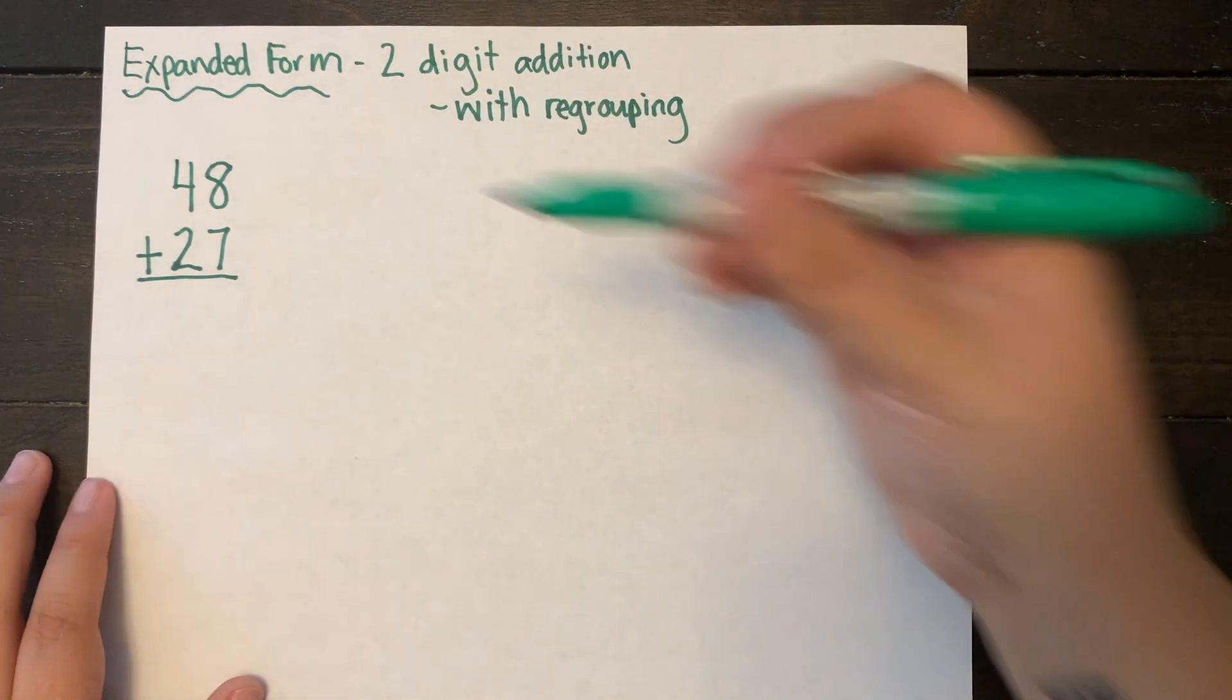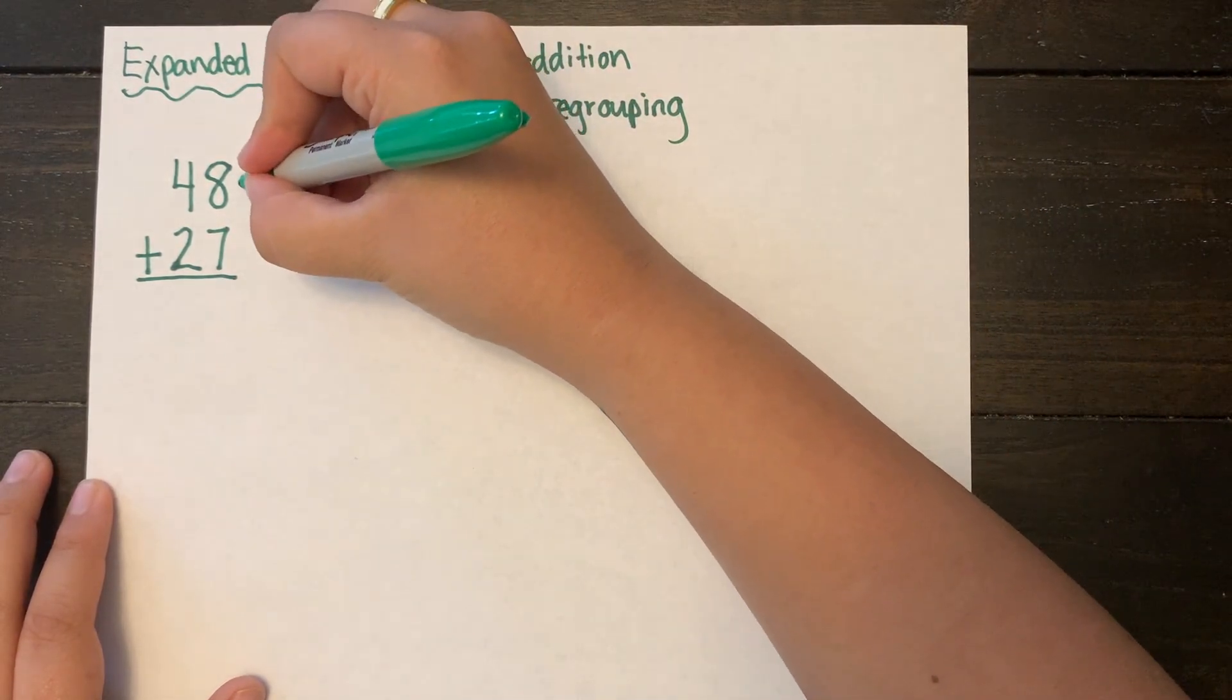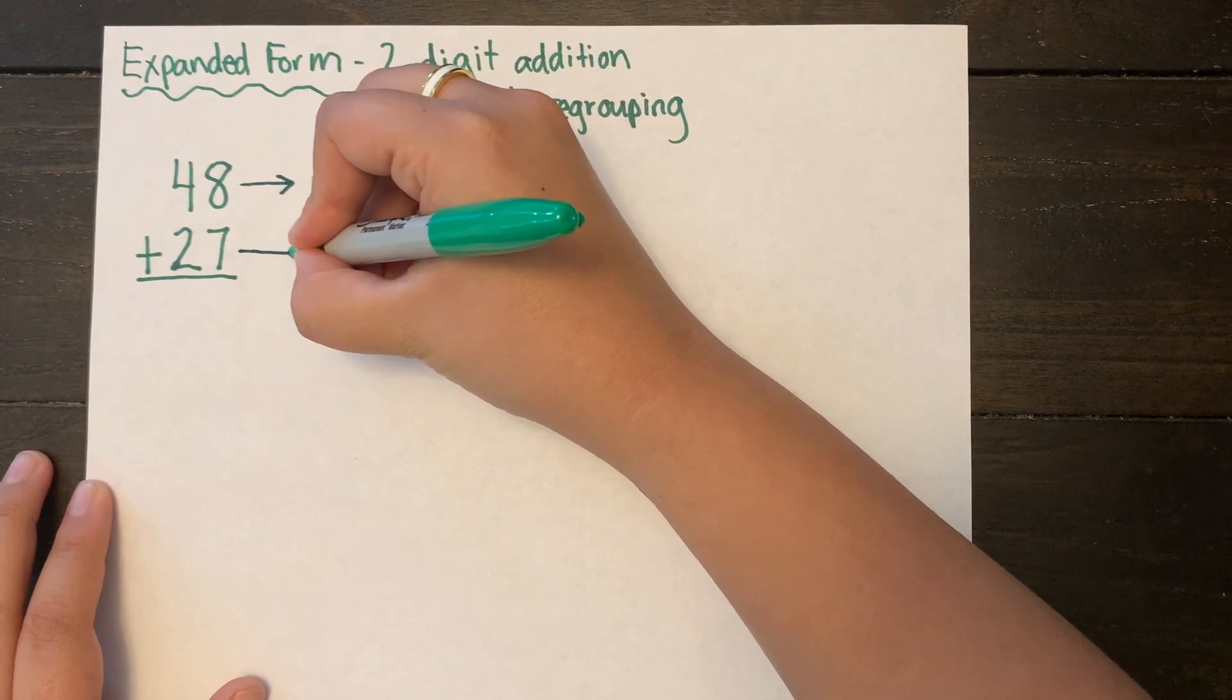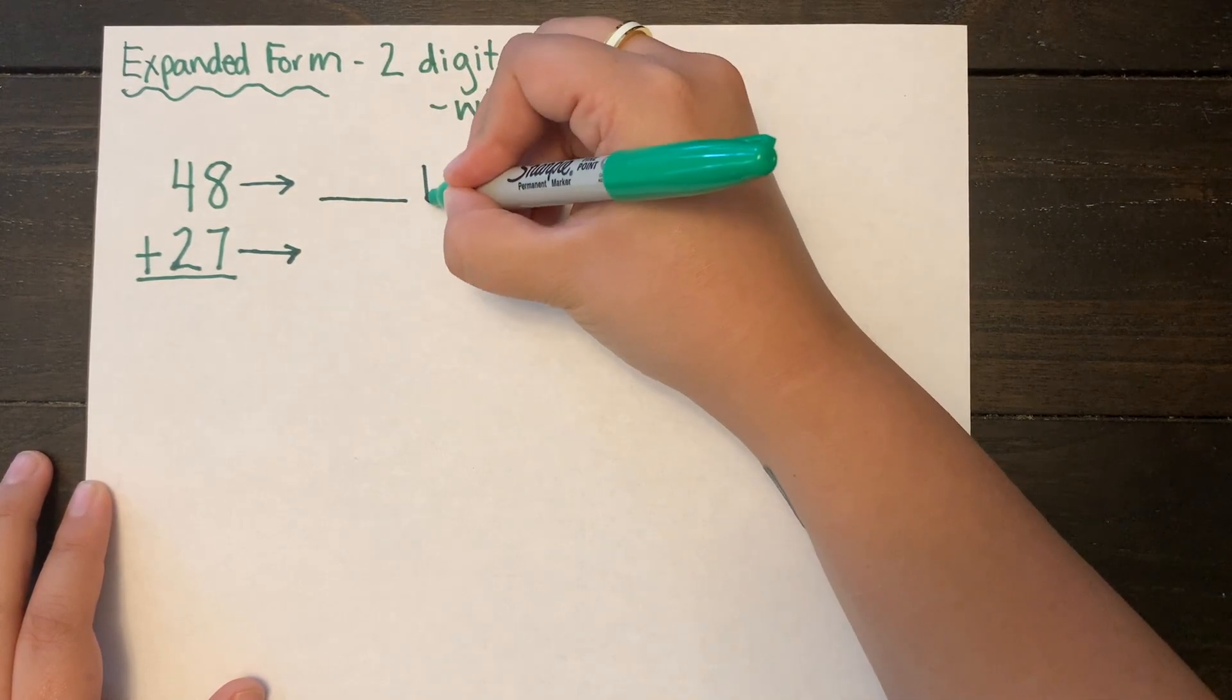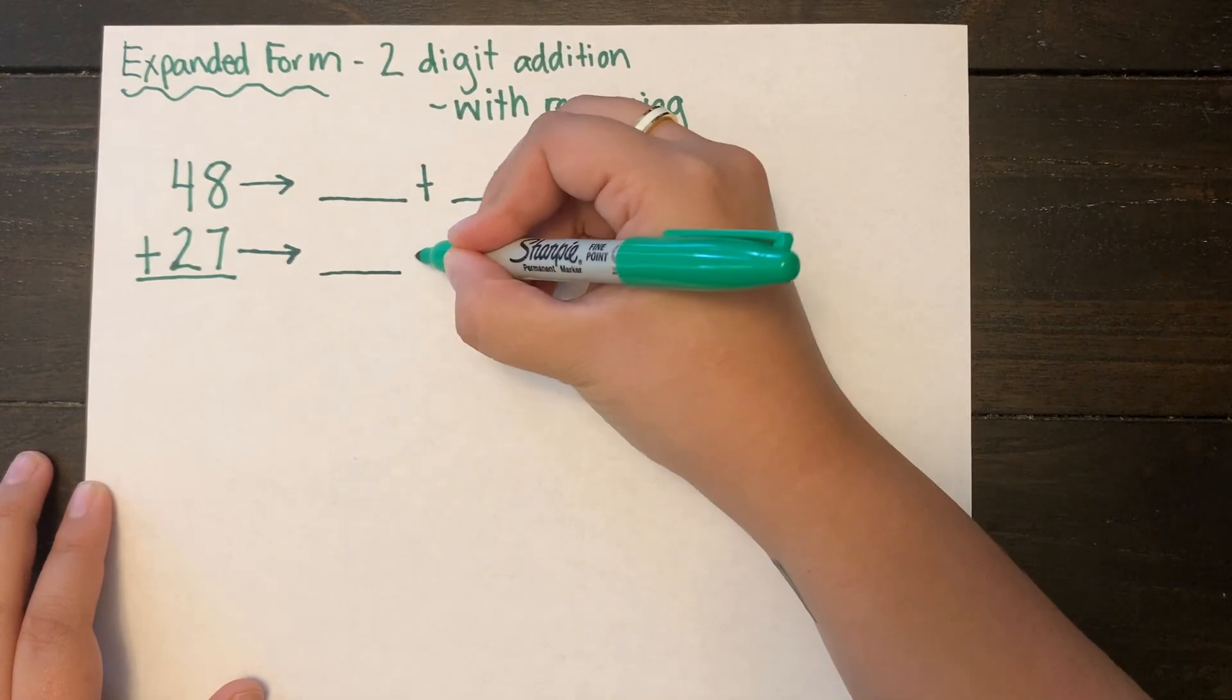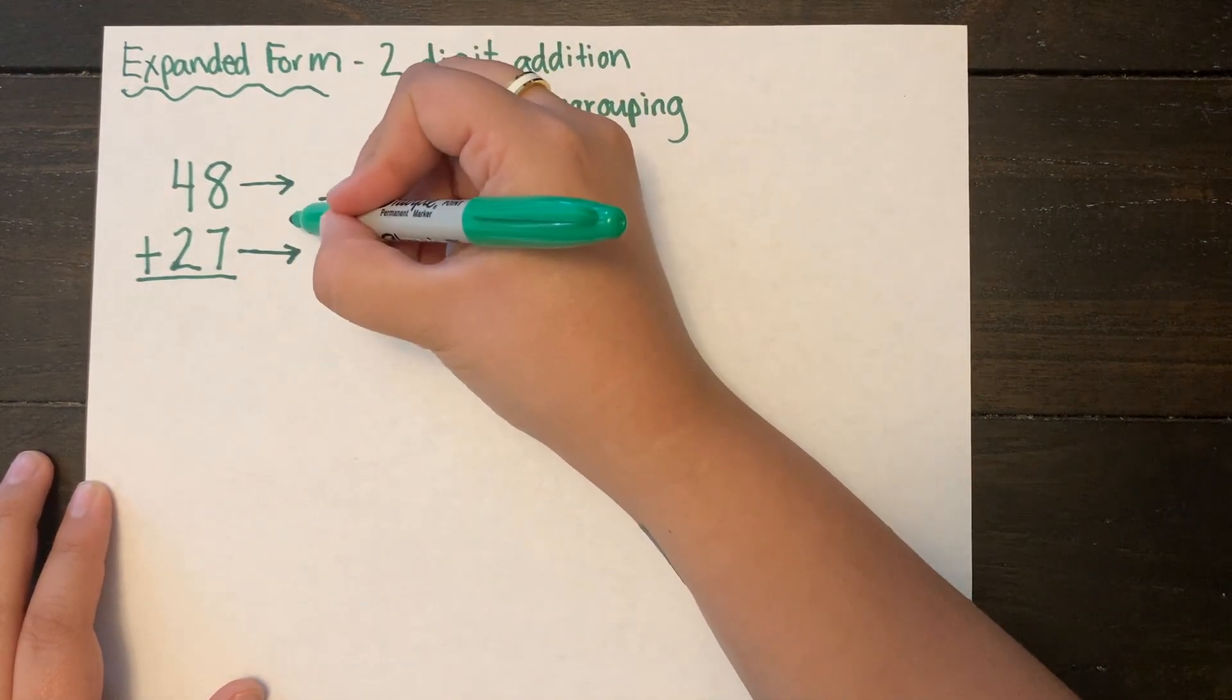So our first problem today is 48 plus 27. First I'm going to draw my arrows so that I know where I'm going to expand out my numbers. Then I'm going to draw out my placeholders which are the lines with the plus signs. These help me keep everything organized and if you are still struggling with this strategy it's a really good idea to keep them in.